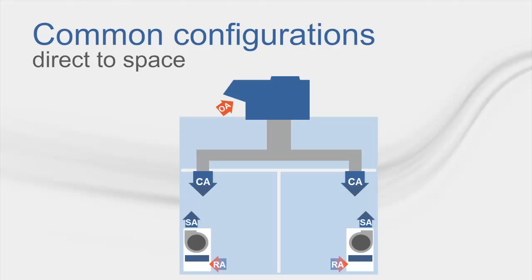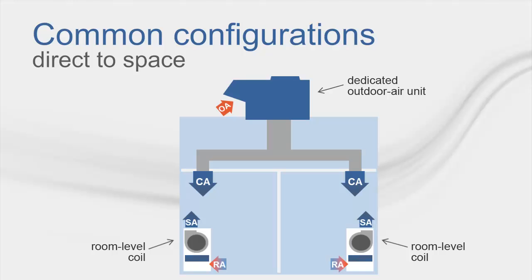To demonstrate how a dedicated outdoor air unit can be applied to a system, let's consider an air-side system with a room-level coil such as a fan coil. The DOA, which can be found on the roof in the schematic, meets the outdoor air requirements by treating the outdoor air for all the rooms in the system. The conditioned air is then supplied directly to the rooms, and the fan coils controlled by room thermostats satisfy the remaining cooling and heating loads in each room.